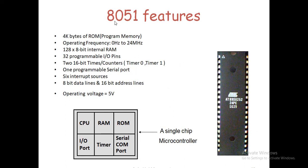There are some series in the 8051 family: 8052, 89S51, 89S52. In this series, there is an upgrade of programmable memory from 4 kilobytes to 8 kilobytes, and RAM is also upgraded from 128 bytes to 256 bytes. They also add features like ISP (in-circuit system programmable) and a watchdog timer. In this lecture series, we focus only on the 8051 microcontroller.